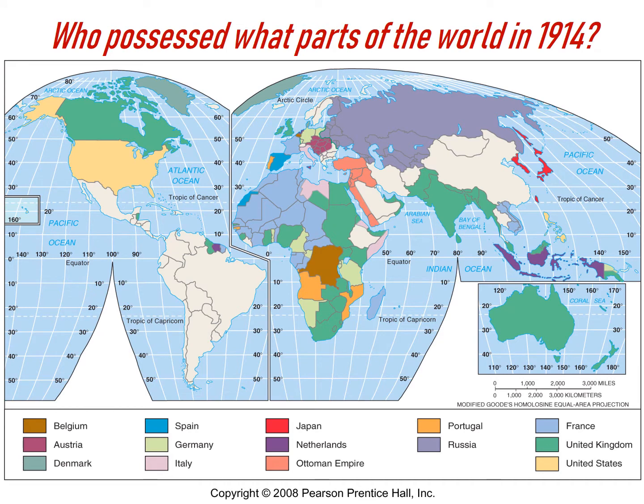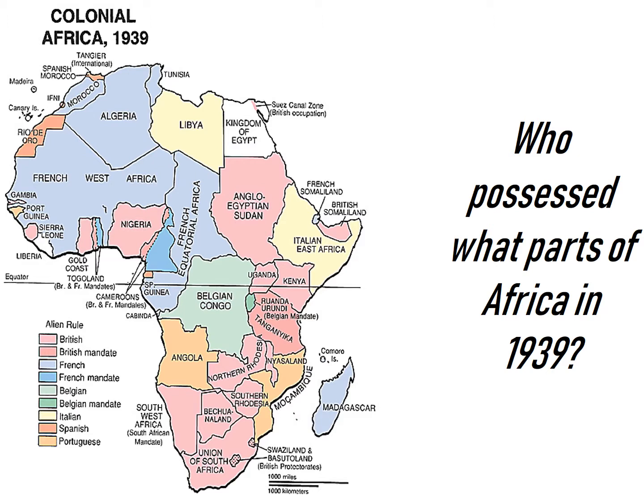Who possessed parts of the world in 1914? It's Europe. Europe possessed the world in 1914, or at least a lot of it. Who possessed parts of Africa in 1939? It's all Europe again. When we talk about colonization, we're not talking about something that happened two or three hundred years ago — we're talking about something coming up on its hundredth birthday. The colonization of Africa was less than a hundred years ago.